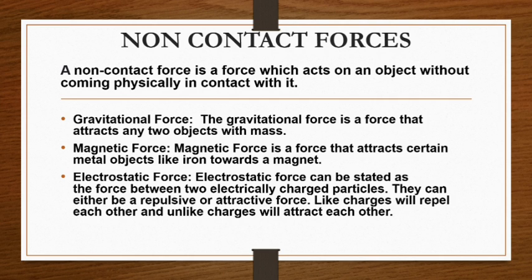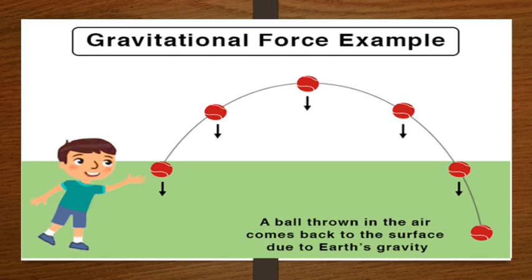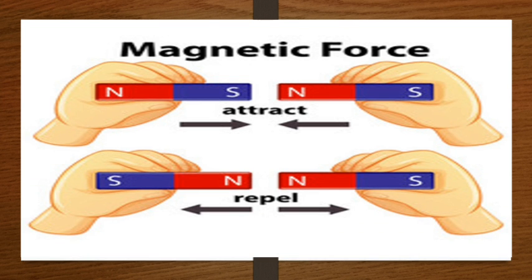Here is an example of electrostatic force: take a balloon, fill it with air, then rub it with a piece of synthetic cloth, and stick it on the wall. It will stick without any glue because the balloon gets charged and a non-charged body is attracted by a charged body. Gravitational force example: a ball thrown in the air comes back due to the earth's gravity. Magnetic force example: the south and north poles attract each other, whereas the north and north poles repel each other — opposite poles attract and same poles repel.